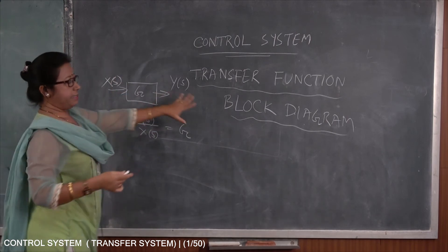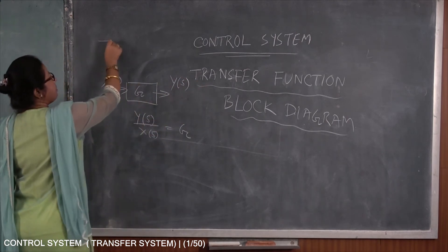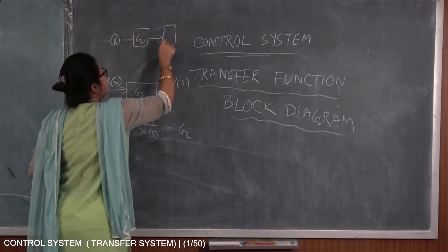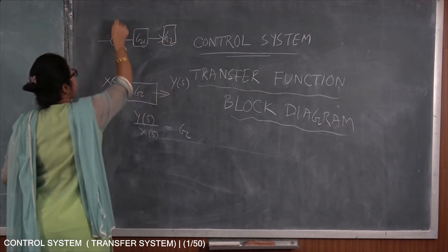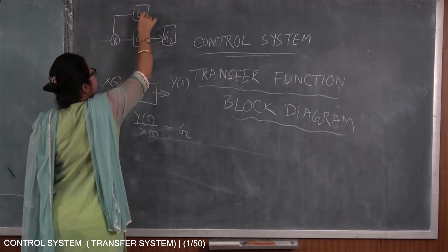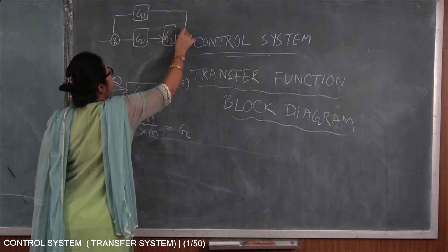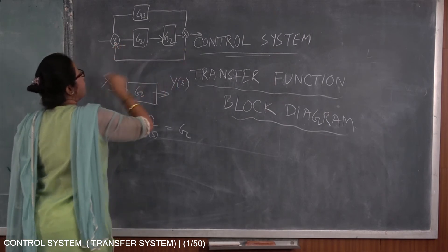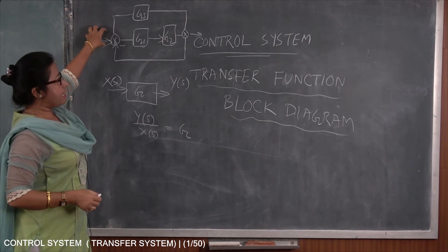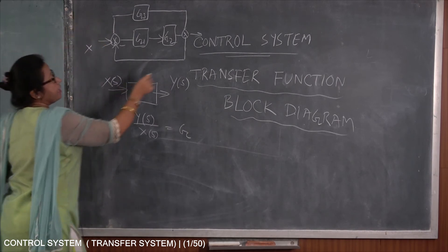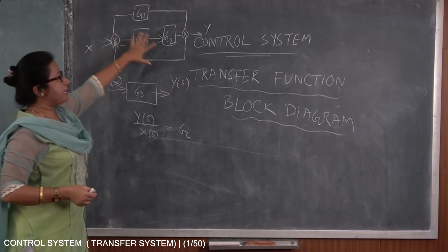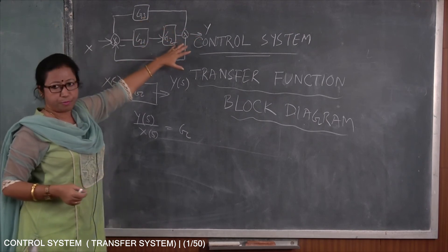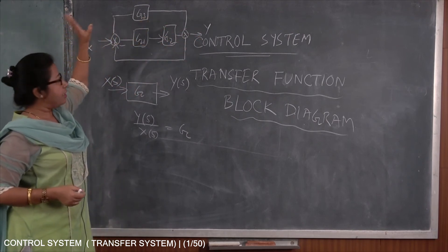So why is it needed in control system? Why block diagram is needed? Suppose I have a system like this. So from this diagram I can understand if I am giving some input here, I am getting some output. How will I calculate the output by input? It will not be very easy to calculate overall output by input if the system is like this.